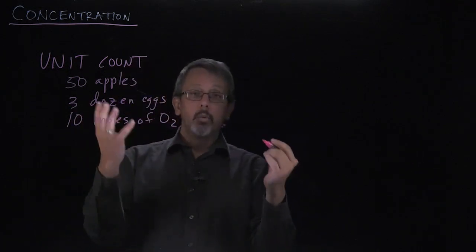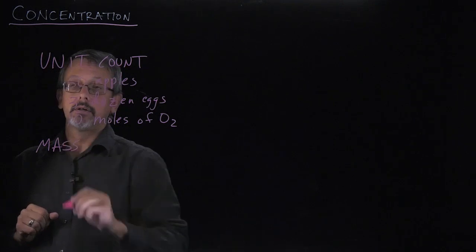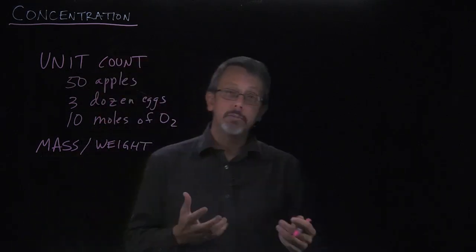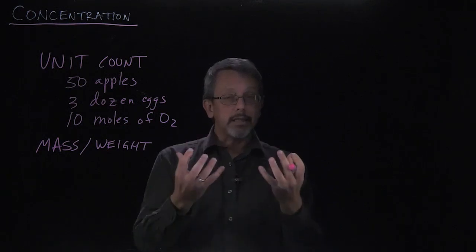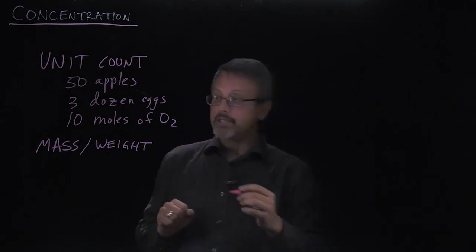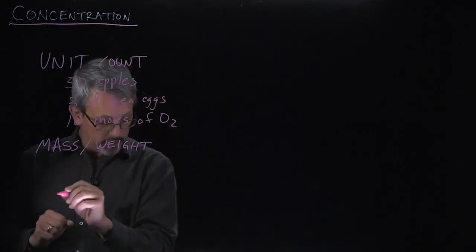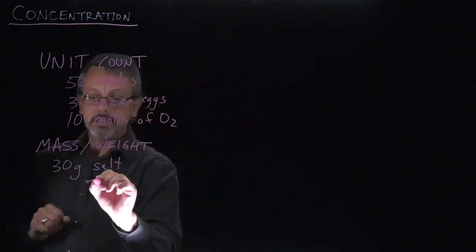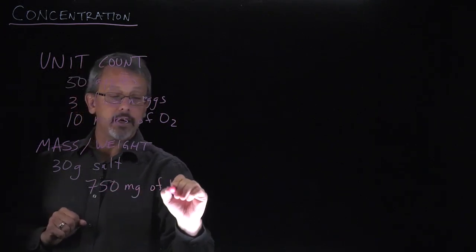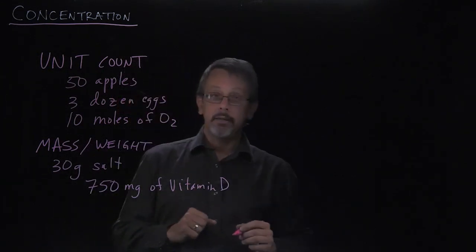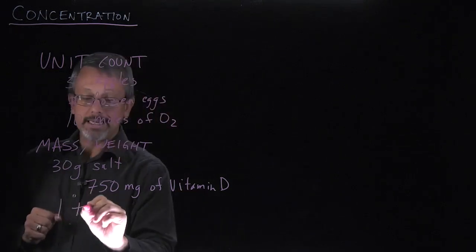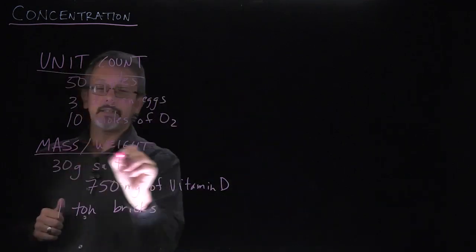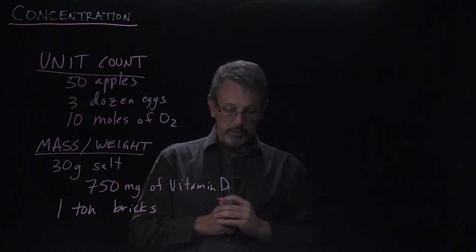We can also talk about the mass of something, and often mass slash weight. I'm going to put weight here because often when we're doing our measurements near the surface of the earth, we can exchange mass and weight. Even though they're not exactly the same thing, we can exchange them through some conversion factors. Our mass and our weight is another way to talk about the amount of something that we have. For example, perhaps we have 30 grams of salt, or 750 milligrams of vitamin D, or one ton of bricks.